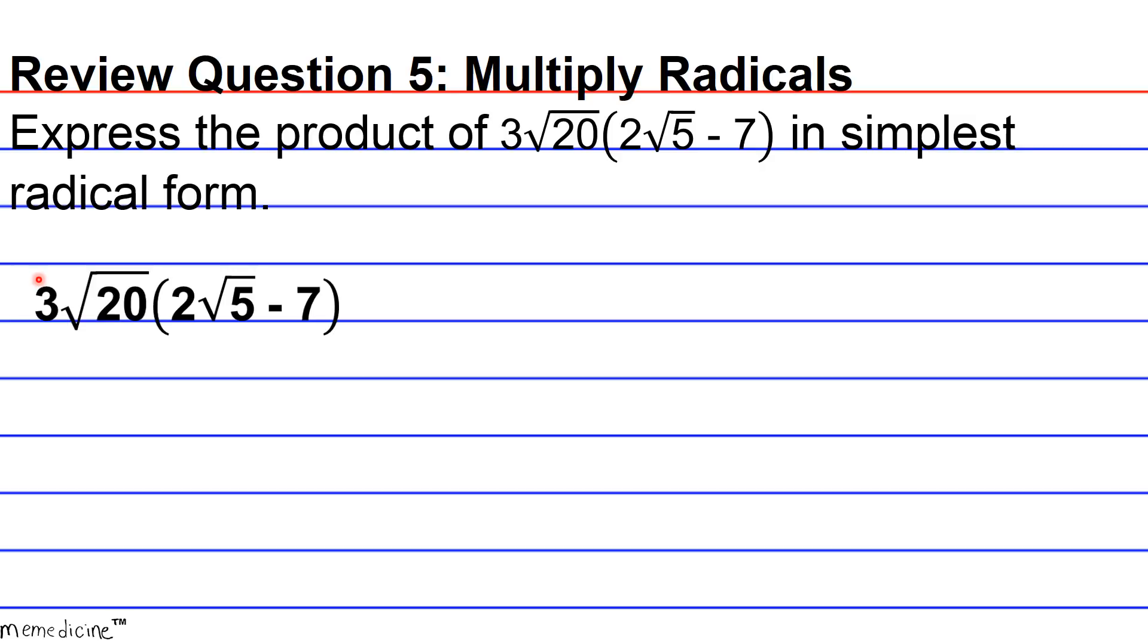If we distribute 3 first to 2, we get 6. In multiplying radicals, you're allowed to multiply the radicands. So 20 times 5 is 100. We get 6√100, or 6 times the square root of 100 for the first term.